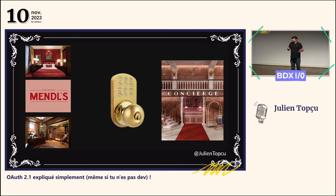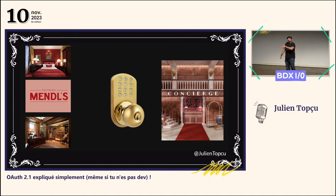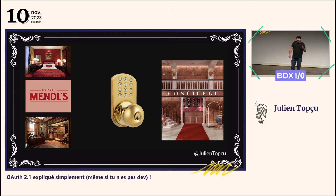De l'autre côté, vous avez le lobby. C'est la partie publique, là où vous avez toutes les entrées-sorties des convives et où on reçoit aussi les visiteurs. Gustave, le gérant de l'hôtel, a sécurisé l'accès aux parties privatives en positionnant sur l'unique porte qui sépare ces deux espaces une serrure à code.